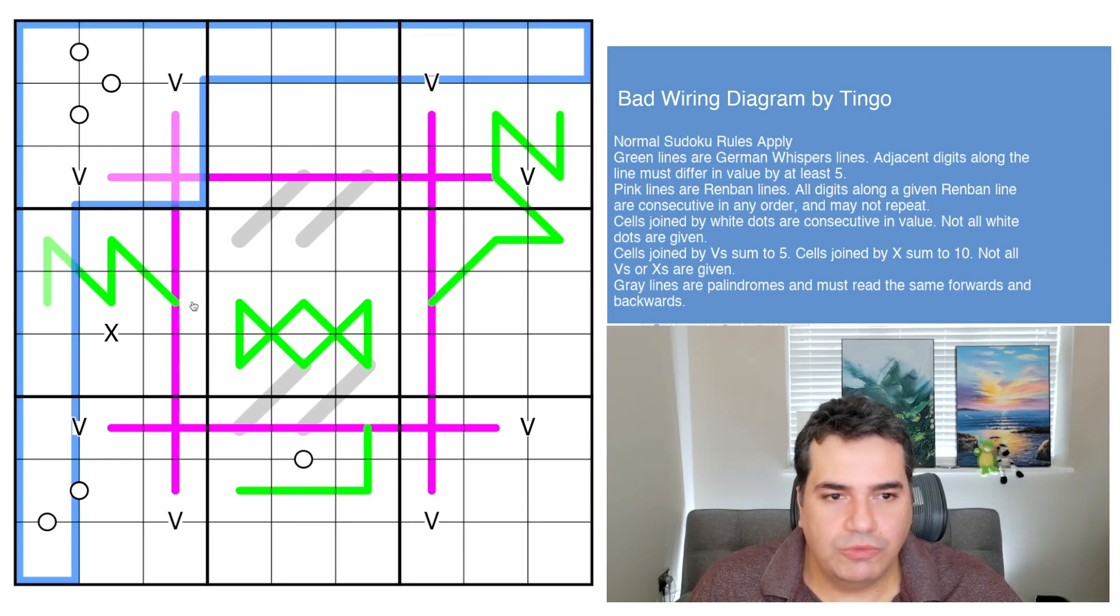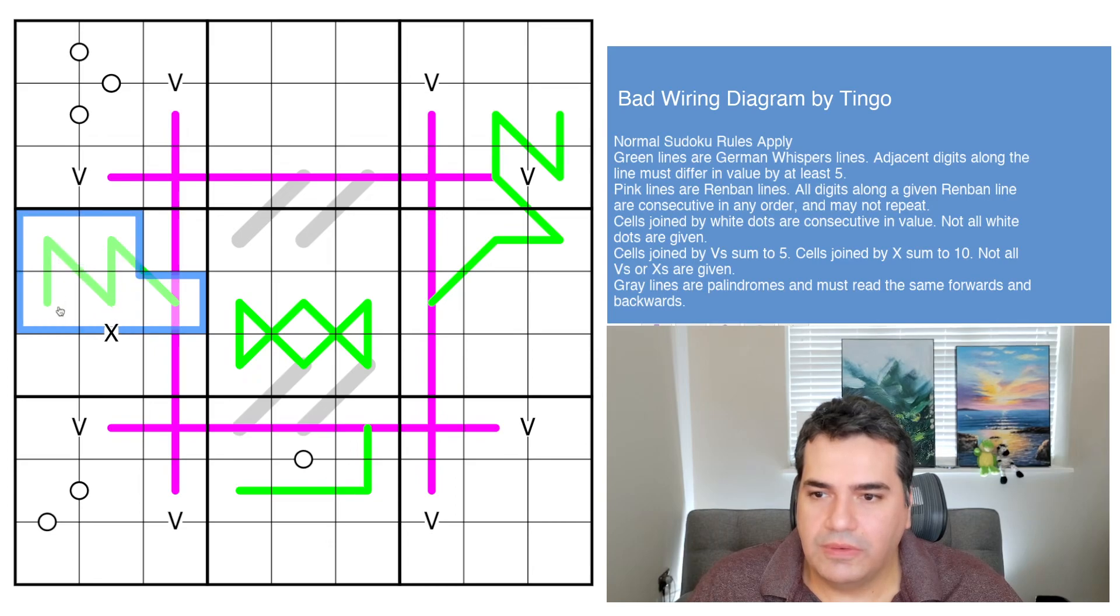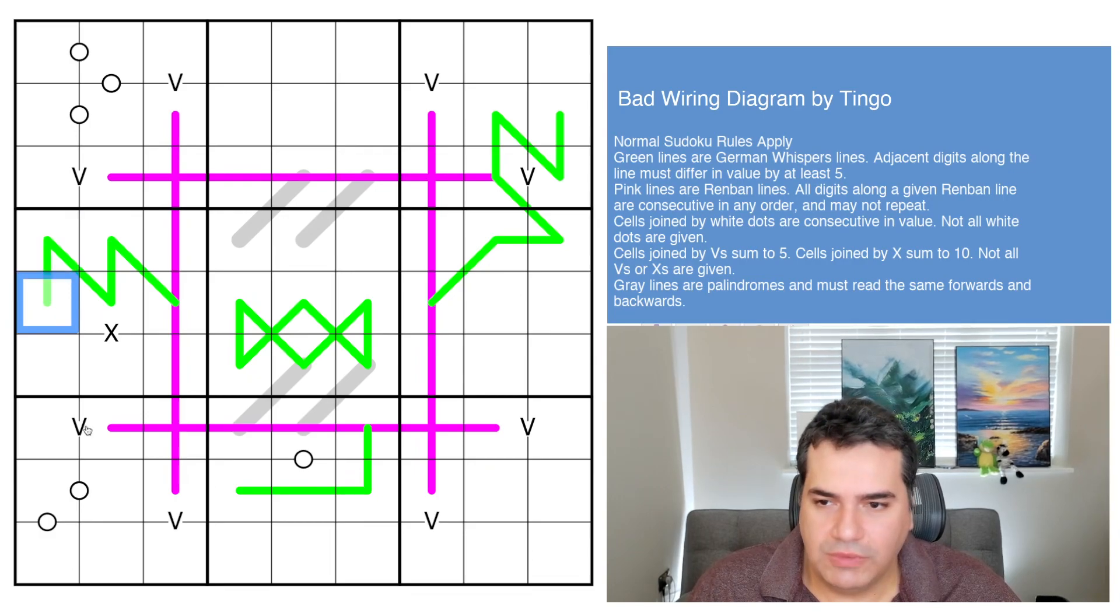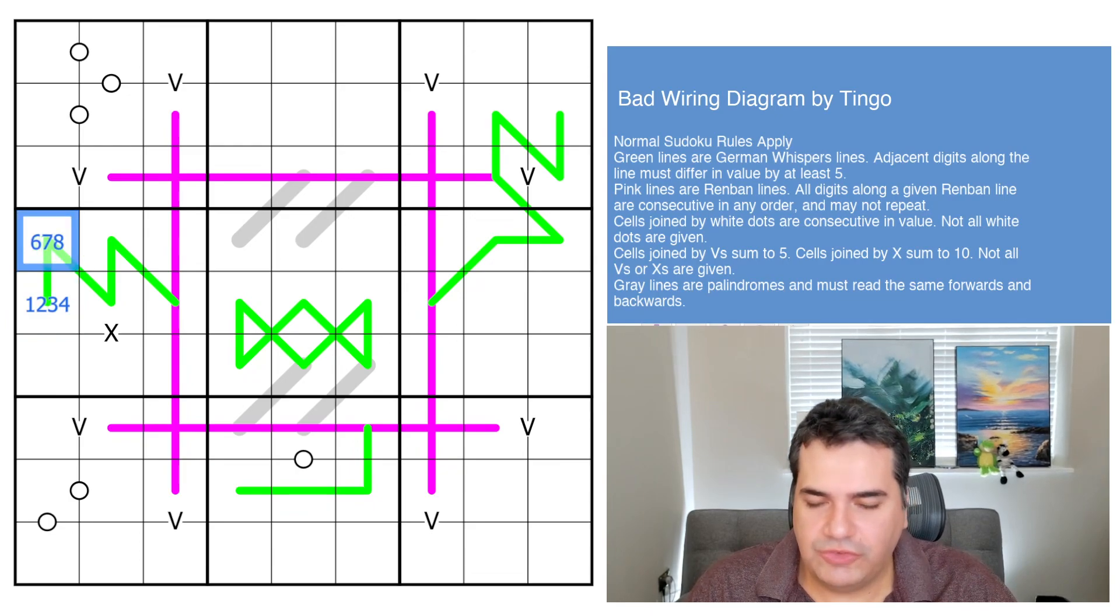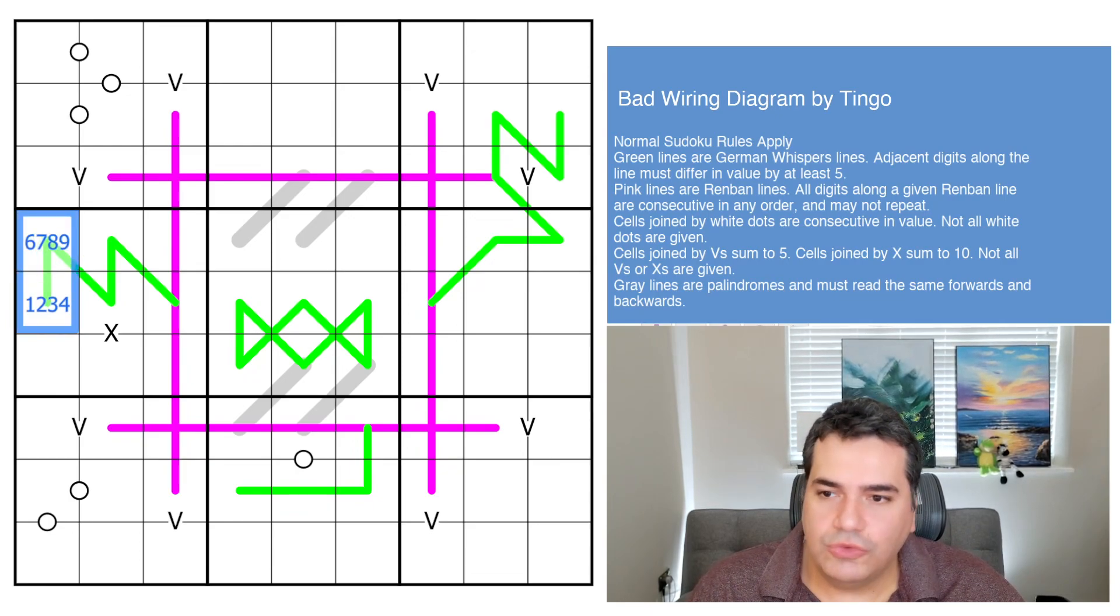Green lines are German whispers, and we've seen these before on the channel, where essentially each adjacent cell would have to be of different polarity. So this can be from the digits one, two, three, and four, and therefore the next one will be from the digits six, seven, eight, or nine. And notice, because they need to be five away, you cannot place five anywhere on a green line in today's puzzle.